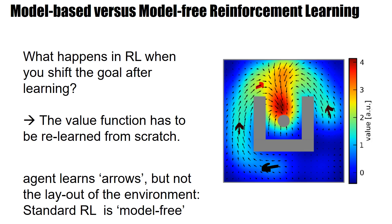The agent in these standard reinforcement learning algorithms — be it SARSA, Q-learning, TD-learning, policy gradient, or actor-critic — just learns the directions. It just learns at each state which action to take.